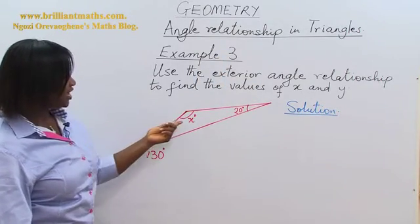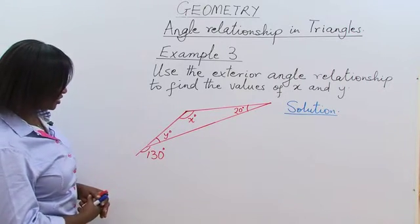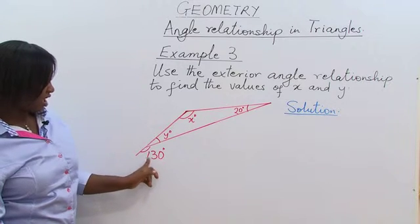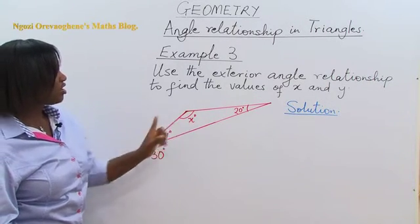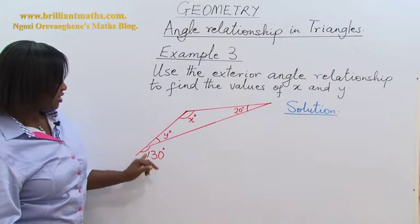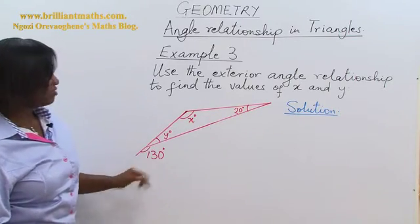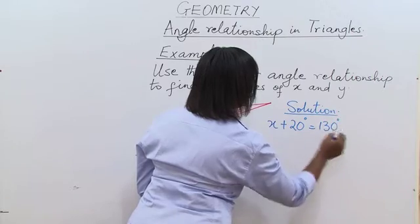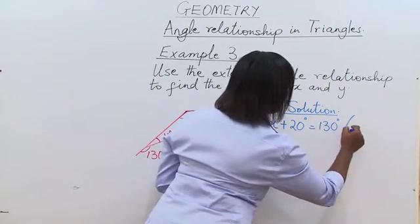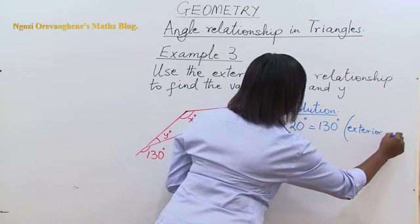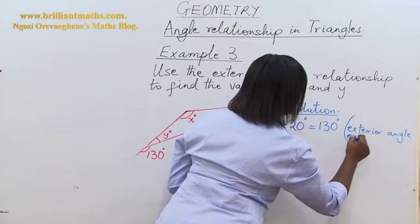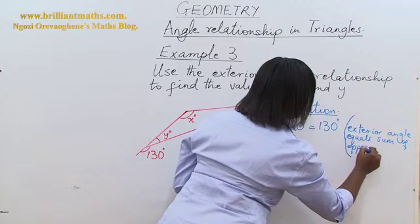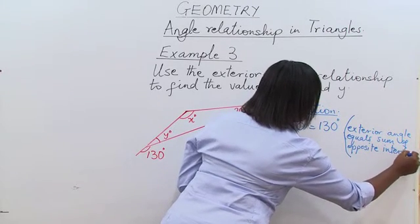So we should find X first. What is the value of angle X? Let's look for the exterior angle — the exterior angle is 130 degrees. So X plus 20 degrees is equal to the sum of the two interior opposite angles to it. Therefore, X plus 20 degrees is equal to 130 degrees. The reason is: exterior angle equals sum of opposite interior angles.